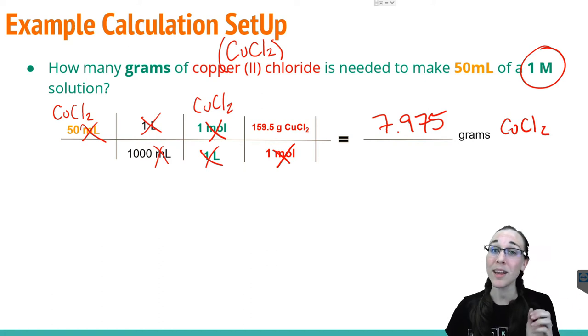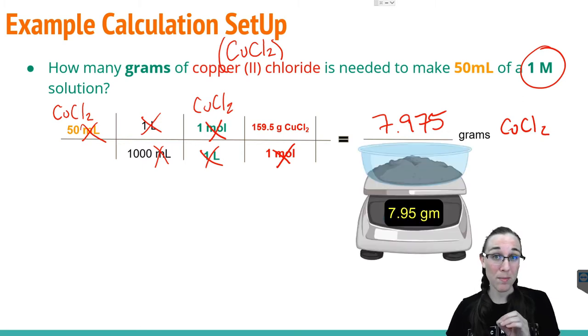In other words, we need to mass out 7.975 grams of CuCl2 from our stock bottle into a weighboat on a scale in order to create 50 milliliters of a one molar solution of CuCl2. Let's see what this looks like in the lab.